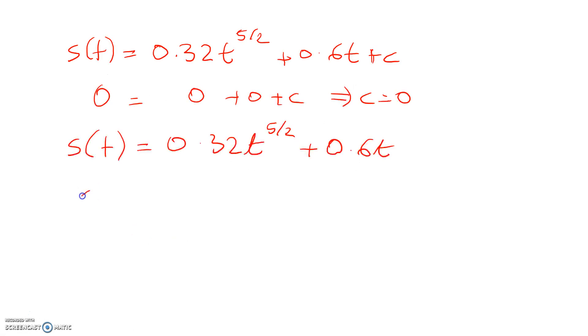And now we have to find, oh, I don't know, what happened to that? Where's it gone? Here we are. Okay, so sorry about that. And now we just substitute in t as 9. So s of 9 gives me 0.32 times 9 to the power of 5 over 2 plus 0.6 times 9. And that works out to be 83.16. And I need to check the meters, the units and its meters. Okay, so that's how far it's traveled in the first 9 seconds.